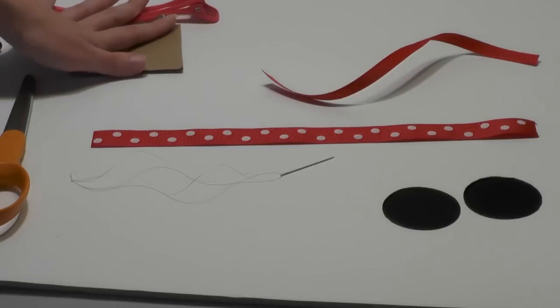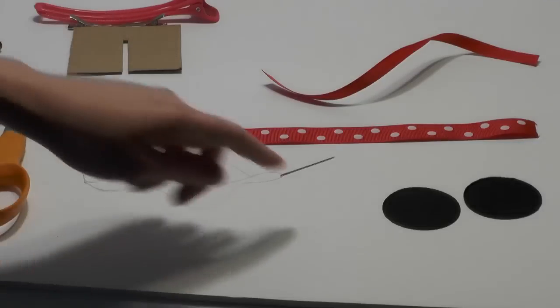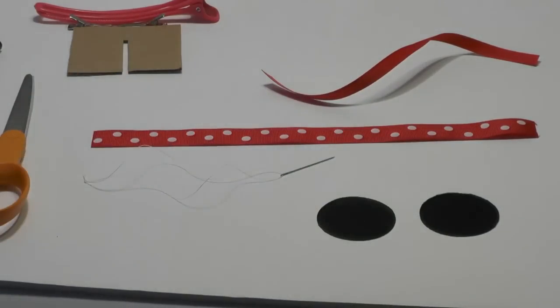I'm using a needle and thread, I've got two 3-inch black felt circles because I am on a felt circle kick, and of course you'll need your scissors and your heat sealing device.